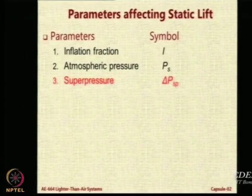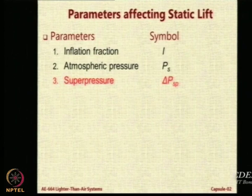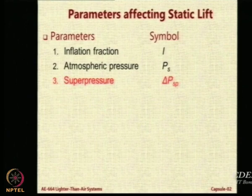We have looked at inflation fraction and found that all you need is the ratio of the pressure and temperature. We looked at atmospheric pressure and found that if superheat is not there, there is no change in the net lift. Otherwise, there are two terms: one is the weight of the ballonet air, the other is the gross lift. Both of them depend essentially on delta P — in one case we divide by T plus superheat, in the other we divide by only T, and you have K into V as the constant parameters.